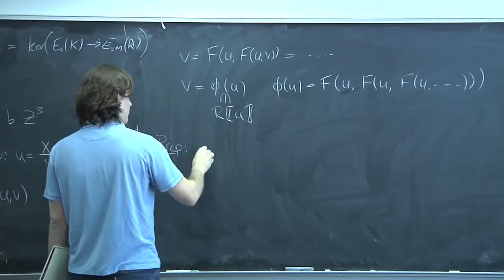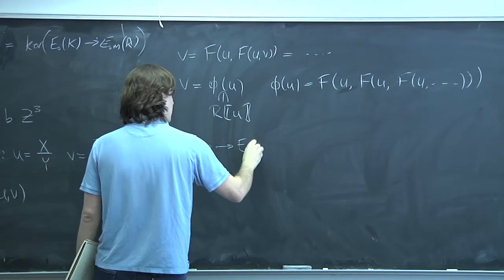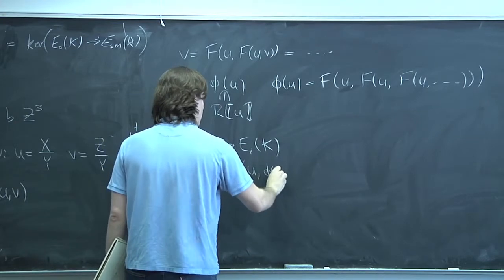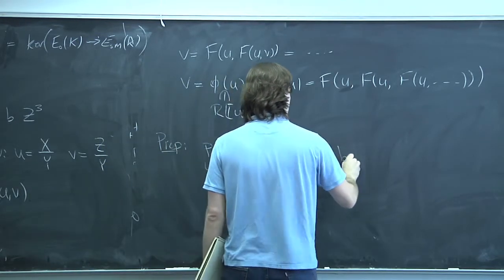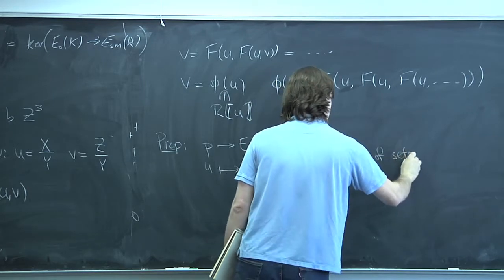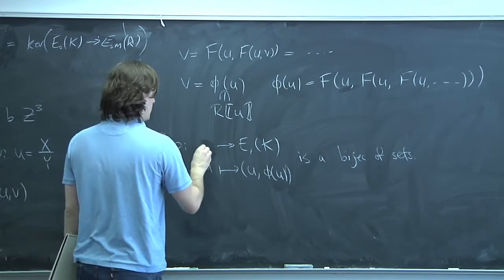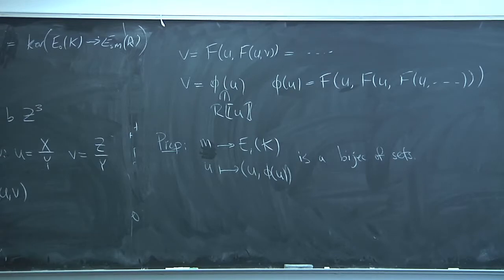The map sending U to (U, φ(U)) is a bijection from mR to E₁(K), where mR is the maximal ideal. This φ(U) converges because our DVR is complete — if you have a power series with integral coefficients, you can plug in something in the maximal ideal and it will converge.